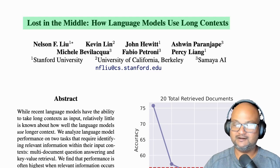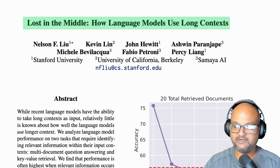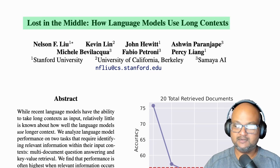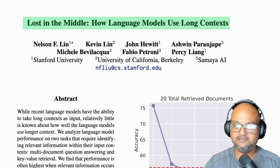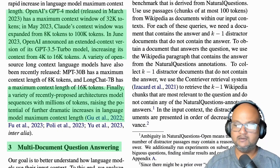Hi folks, welcome back. I hope you're all doing well. Today I'm looking at a paper that came out just a couple of days before I'm recording this. This paper tries to empirically examine how large language models use very large context windows.